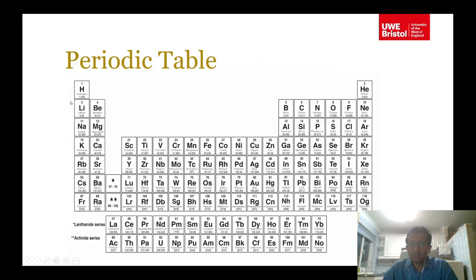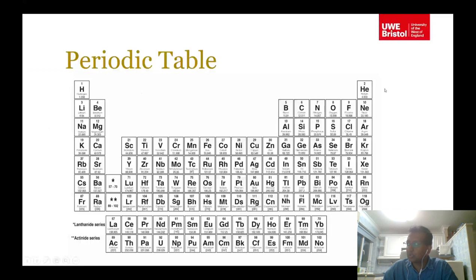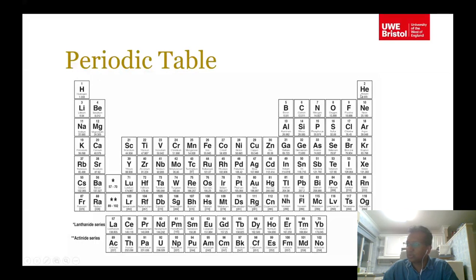In the periodic table you have hydrogen, helium, lithium, beryllium, boron, carbon, nitrogen, oxygen, and so on. Hydrogen is 1, helium is 2, lithium is 3, beryllium is 4, boron is 5, and so on. That means one kilo-mole of hydrogen is 1 kilogram and one kilo-mole of helium is 2 kilograms.